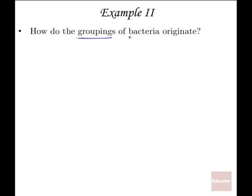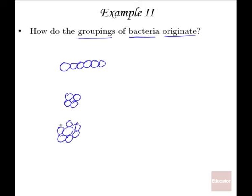How do bacterial groupings originate? They relate to cell division patterns. If division occurs in the same plane, bacteria are arranged in chains. If division occurs perpendicular to one another, they form symmetrical packets. If the plane of cell division is random, the clustering is random as well — that's how groupings occur based on how cells divide.